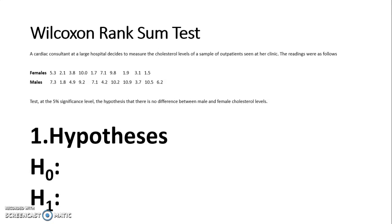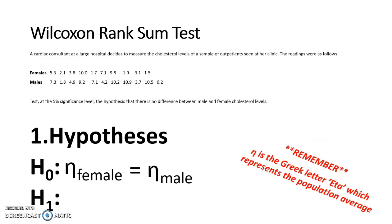So for our null hypothesis we are going to use eta female equals eta male. There's a reminder that the weird N with the elongated right hand side is the Greek letter eta and that represents the population average. Sometimes we can use mu but it's safer to use eta because then that takes into account mean and median.